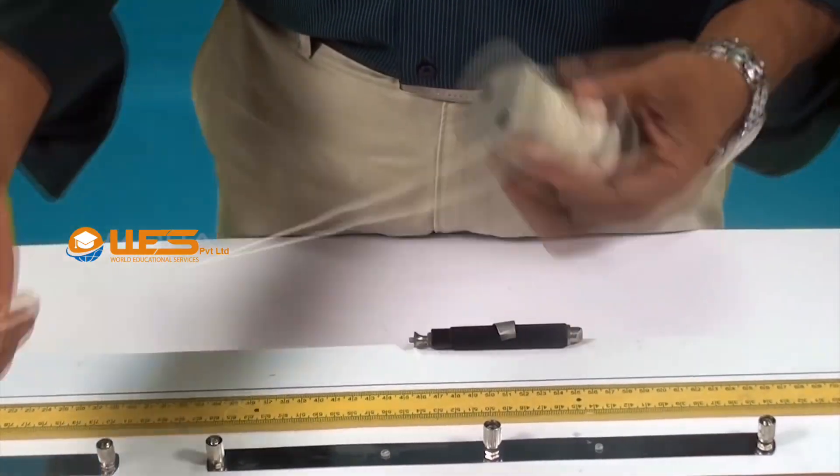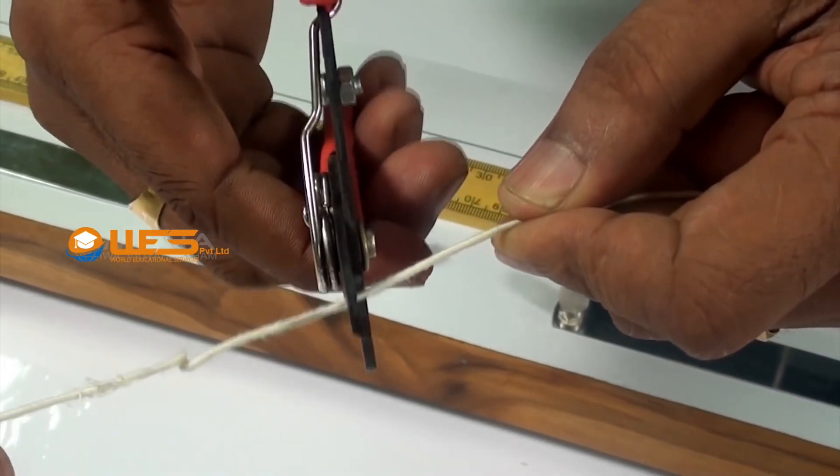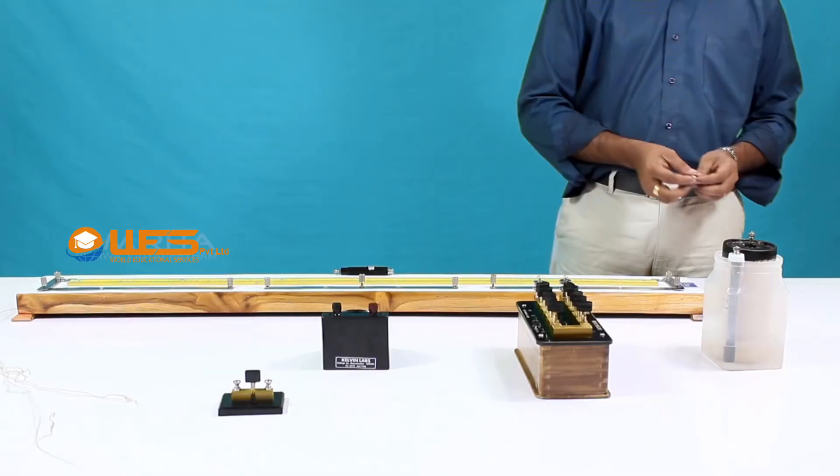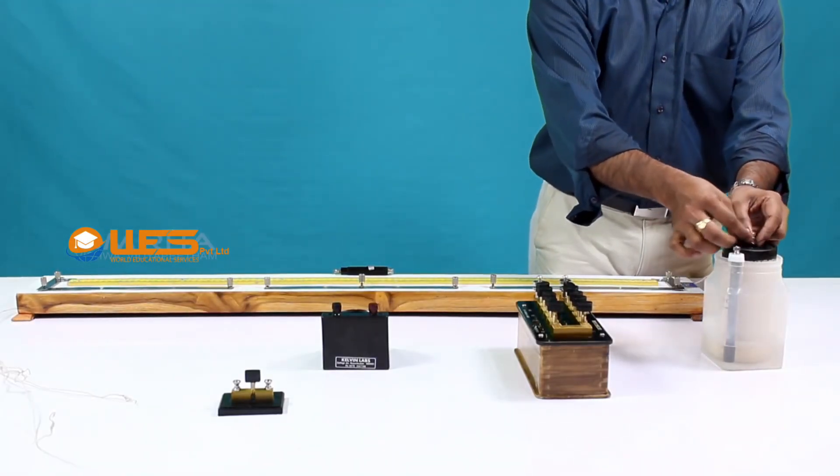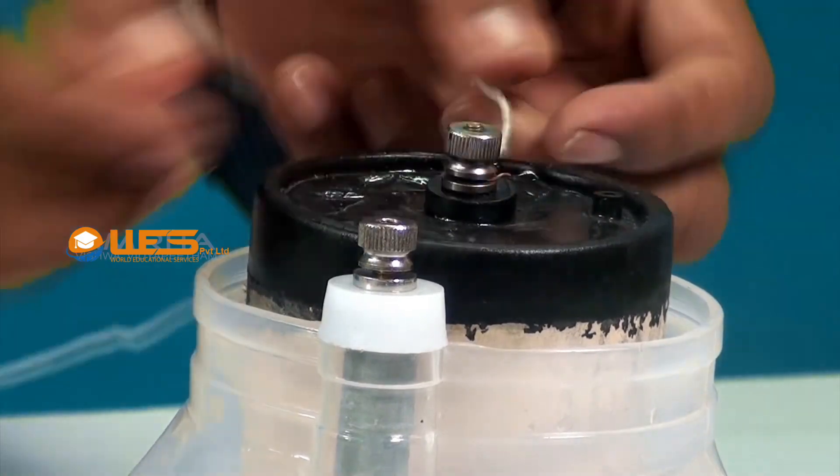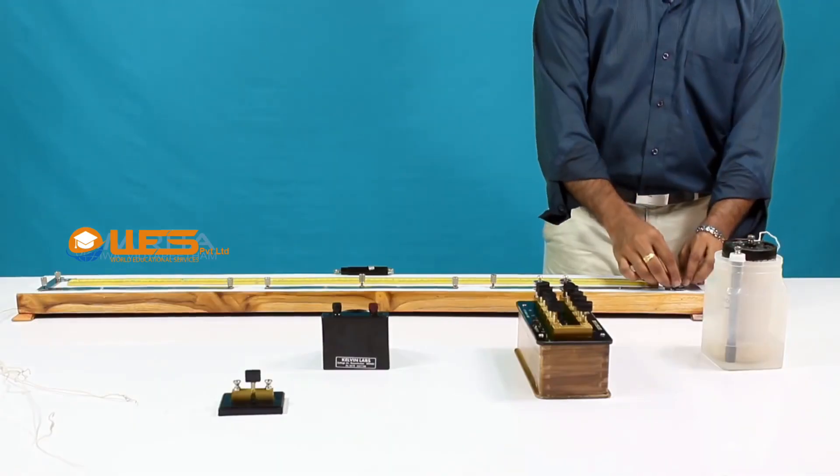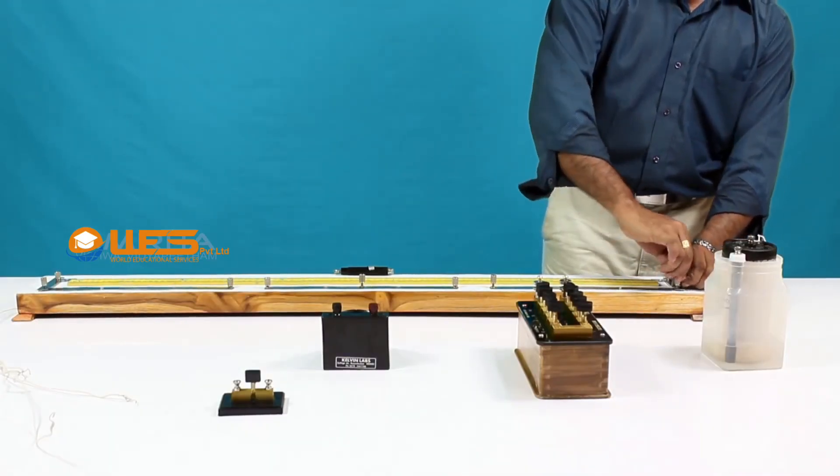Take a connecting wire and cut it using a wire cutter. Connect one end of the wire to the positive terminal of the leclanch cell and the other end to terminal A of the meter bridge.